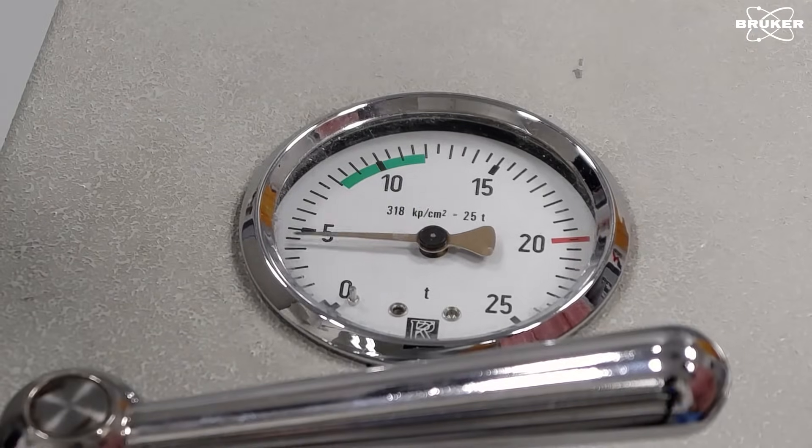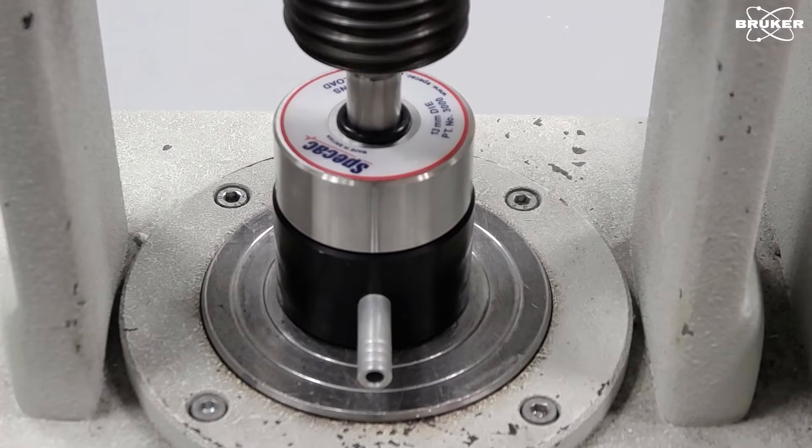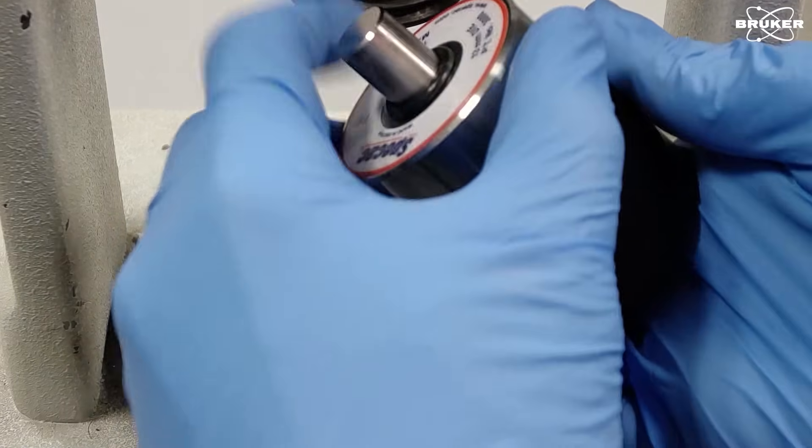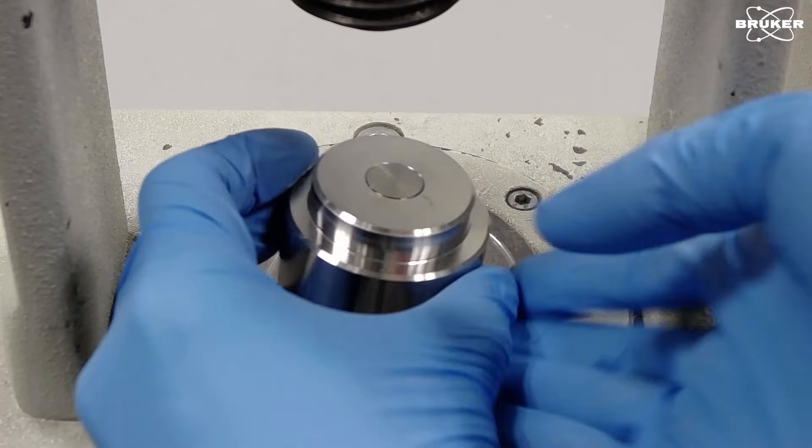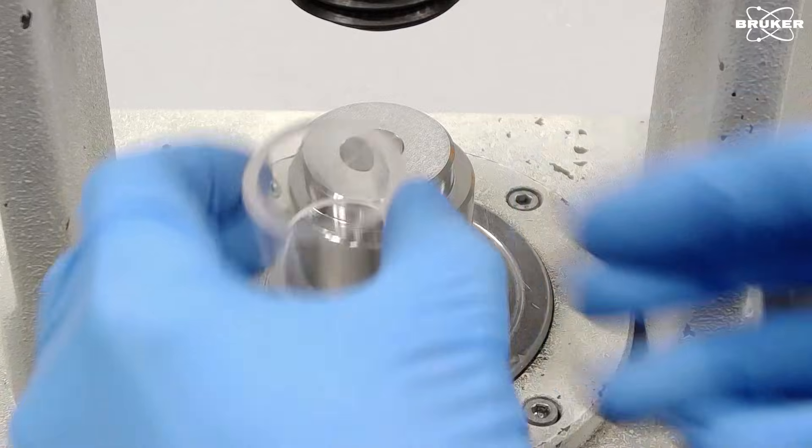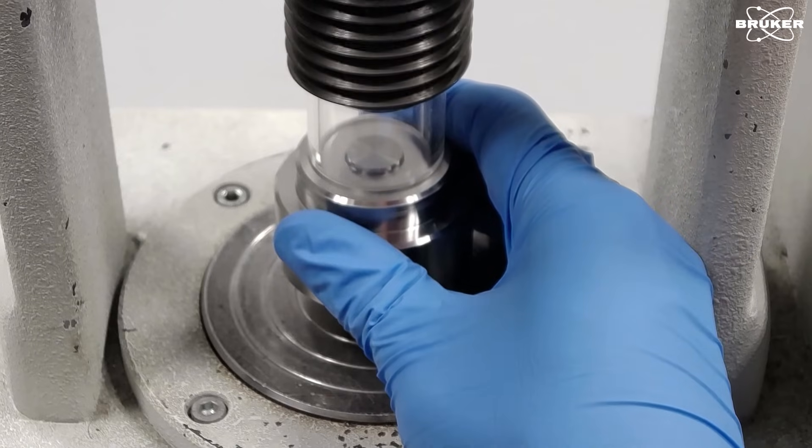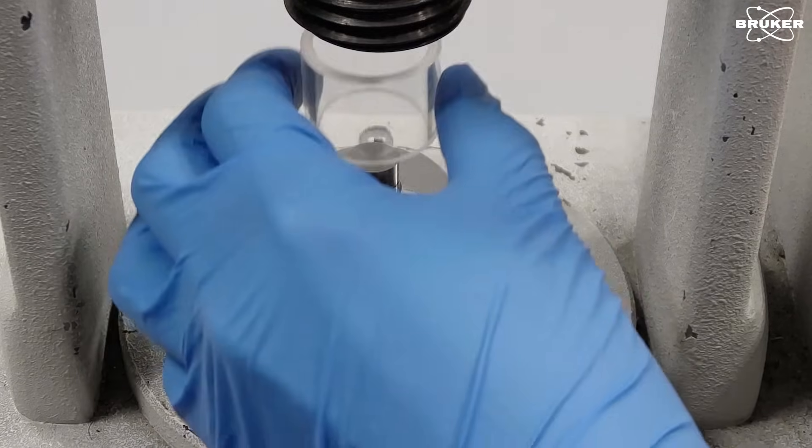Then release the pressure. Take out and disassemble the pellet die. Prepare it for pellet extraction and transfer the pellet die to a safe place.